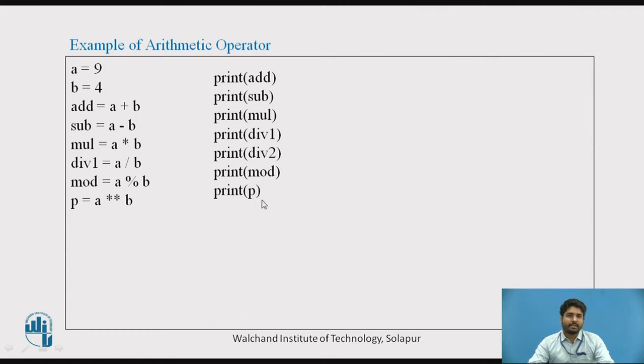If I want to print or calculate this, I need to use print function. So printing the result: print addition, print subtraction, print multiplication, then division, then print modulus, and printing power. The output will be adding these two numbers, then subtracting, multiplying, division, and taking the modulus. 9 divided by 4, the remainder will be 1, and the power 9 raise to 4 is 6561. This was a simple example to show how arithmetic operators work.